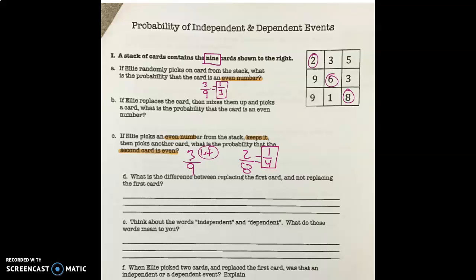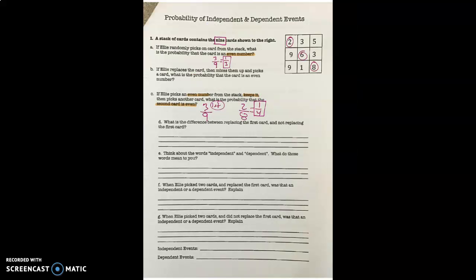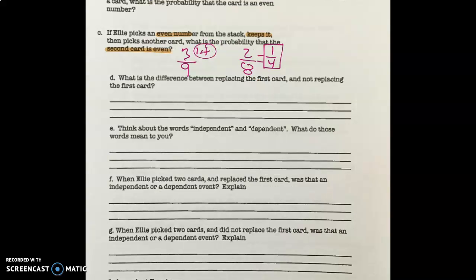Letter D — what is the difference between replacing the first card and not replacing the first card? If you pull a card out of a stack of nine cards and you put that card back, how many cards are there still? There's nine. But if you pull a card and you keep that card, how many are in that stack now? There's only eight. That's letter D.